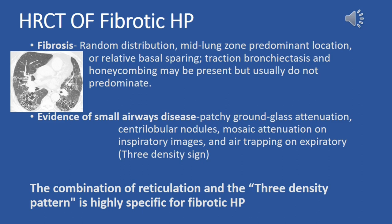In HRCT findings of fibrotic hypersensitivity pneumonitis, fibrosis may exhibit a random distribution, be mid-lung zone predominant, or show relative basal sparing. Traction bronchiectasis and honeycombing may be present but usually do not predominate. Evidence of small airways disease includes patchy ground glass attenuation, centrilobular nodules, mosaic attenuation on inspiratory images, air trapping on expiratory images, and the three-density sign.